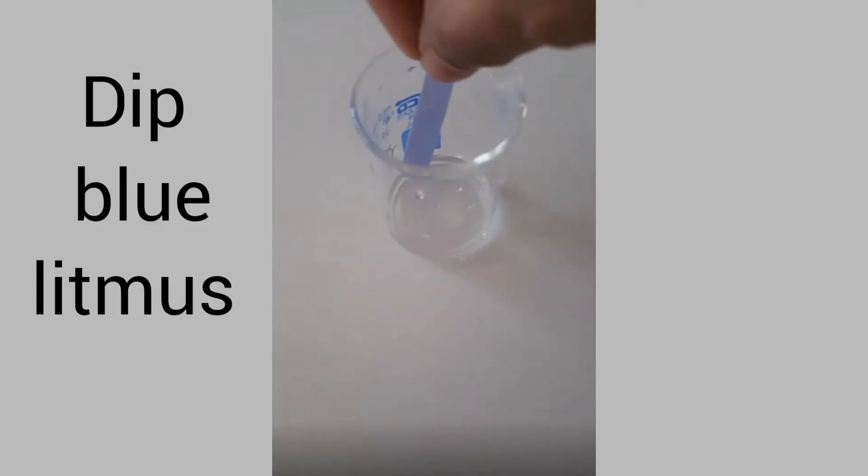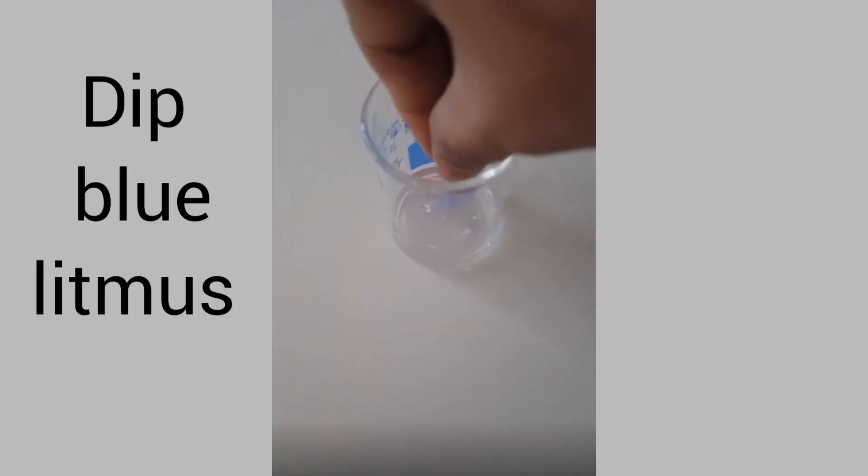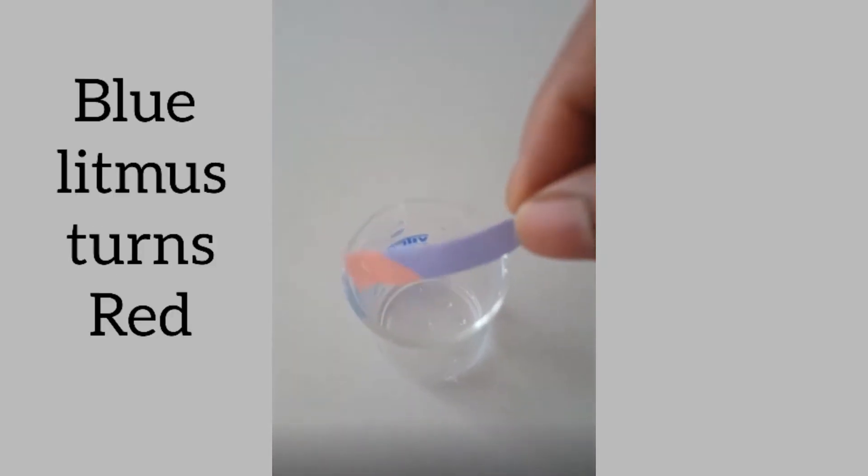Now, I am going to take blue litmus paper to do a test with the first solution. I am going to dip into the first solution now. You can observe. Wow. You can see the blue litmus paper has changed to red in color.